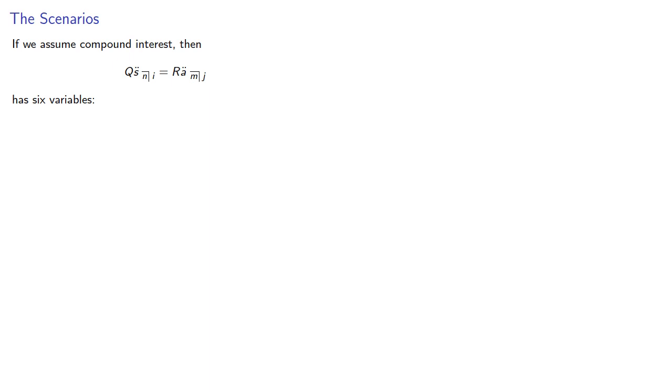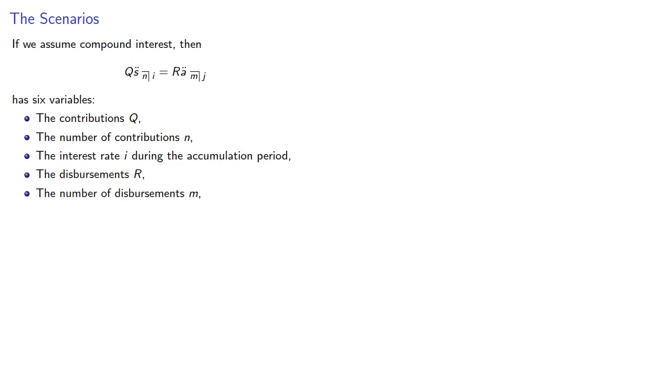If we assume compound interest, then q s double dot angle n at interest rate i should equal r a double dot angle m at interest rate j, and we have six variables: the contributions q, the number of contributions n, the interest rate i during the accumulation period, the disbursements r, the number of disbursements m, and the interest rate j during the disbursement period. Given any five we should be able to find the sixth.